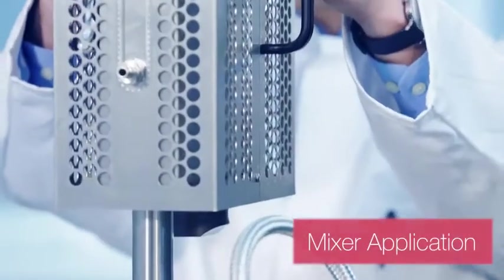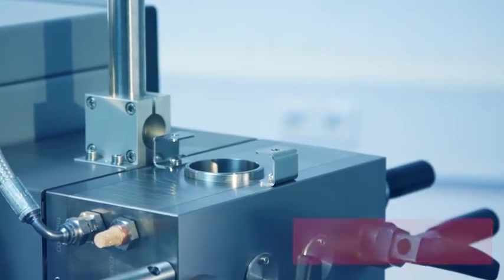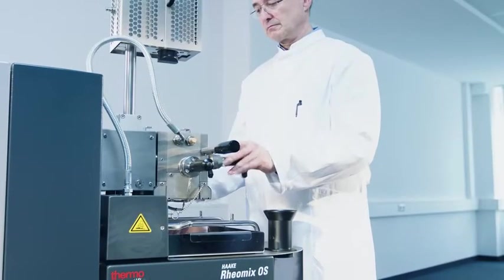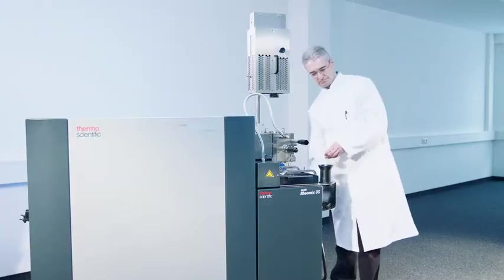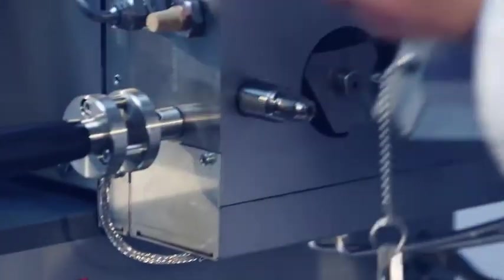The HAAKE PolyLab system's mixer application is used for batch testing of substances with high viscosity. It produces a rheogram specific to each material formulation and its processing behavior. Polymers, elastomers, fillers, and additives can be tested on a small scale to optimize manufacturing on a large scale and to increase process profitability.